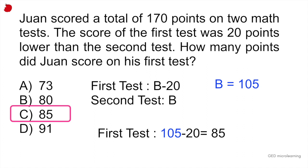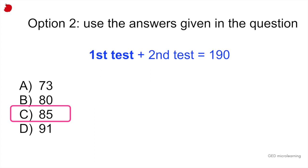So maybe this system didn't work for you. If that's the case, there's another way to solve this problem. And that is using the answer options that they provide for you. So they tell us in the question that the results of test one plus test two are going to equal 190.